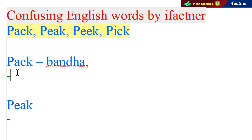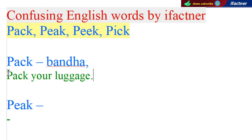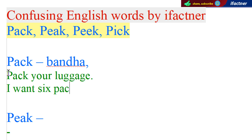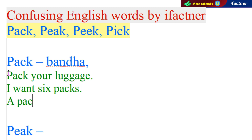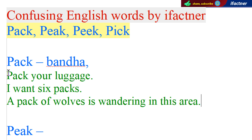Toh chalein, kuch sentences banaate hain aur in meanings ko use karne ki koshish karte hain. 'Pack your luggage' — apna saamaan pack karo, apna saamaan baandho. 'I want six packs' — yaani ke main exercise karke apne pet pe chhe packs banana chahta hoon. 'A pack of wolves is wandering in this area' — is ilaake mein ek wolves ka pack, bhediyaon ka jamghata, ghoom raha hai. Wandering hota hai idhar udhar ghoomna.